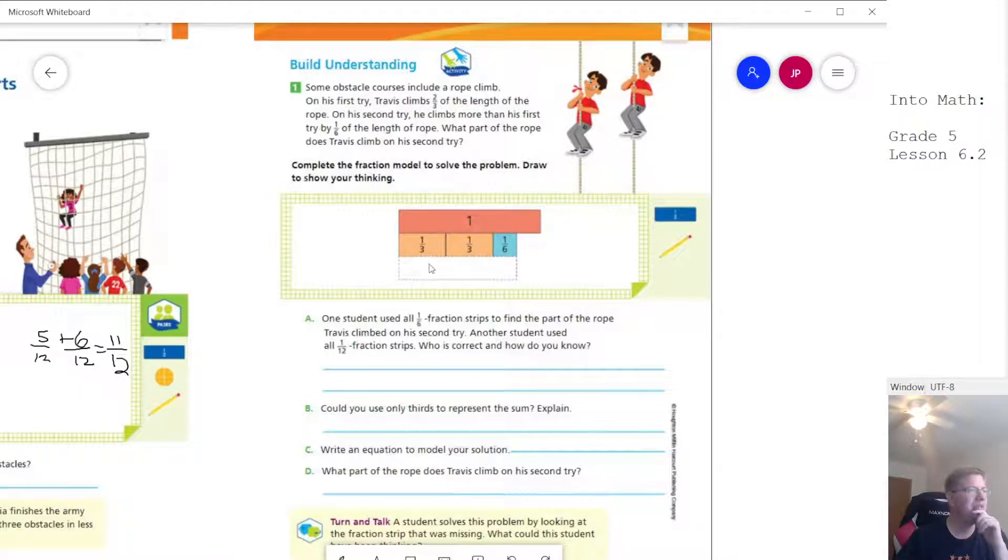So we get this far for the first one, we get this far for the second one. And so what we can do is we can actually divide this up into sixths to figure out what our answer should be and then count them up. And so we would get one, two, three, four, five sixths for that.